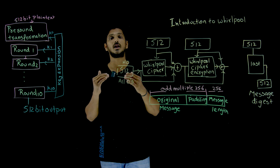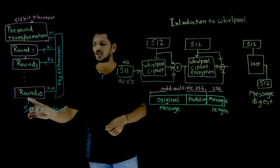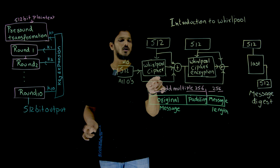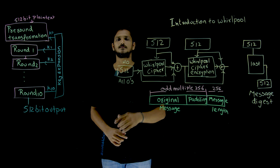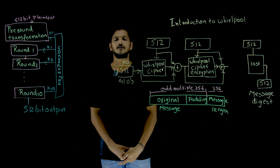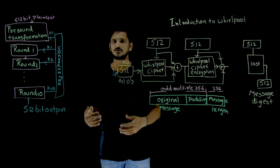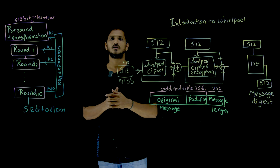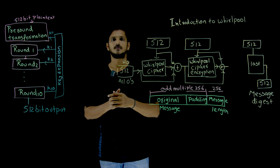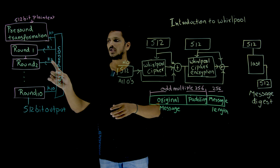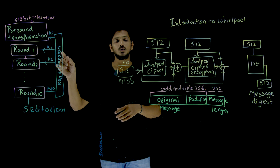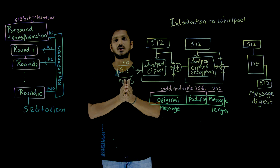The output from Round 1 is given as input to Round 2, and this process continues for all 10 rounds. The final 512-bit output we get is the encrypted output for that block. What happens inside each individual round will be discussed in our next class.